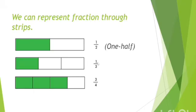In second figure, a strip has 3 equal parts. 1 part is shaded. So fraction is 1 third or 1 upon 3. In third figure, a strip has 4 equal parts. 3 parts are shaded. Fraction is 3 fourth or 3 upon 4.